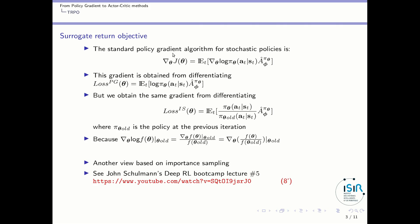The standard way to compute the gradient of the global utility function with respect to policy parameters is given by this formula. This gradient is obtained by differentiating that loss function. But we can obtain exactly the same gradient from differentiating another loss function, which will be our surrogate loss function, where P of theta-old is the policy at the previous iteration. Differentiating that is equivalent because of a property of the log gradient. So in TRPO, we will use this surrogate loss function instead.